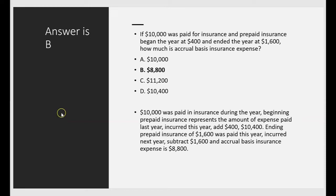$10,000 was paid for insurance during the period. The beginning balance of prepaid insurance, $400, represents the amount of expense paid last year and incurred as an expense this year — so add $400, bringing us to $10,400. The ending prepaid insurance of $1,600 was paid this year and won't be incurred until next year — so subtract $1,600. Accrual basis insurance expense is $8,800, letter B.